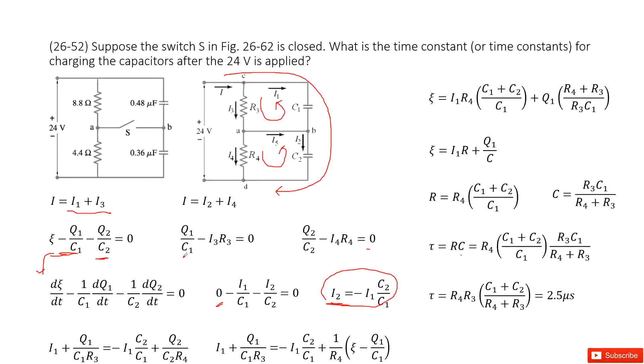So I1 is zero. I3 can be replaced as Q1 divided by C1 times R3. I2 is this term. And I4 is Q2 divided by C2 times R4. Agree? Yes.